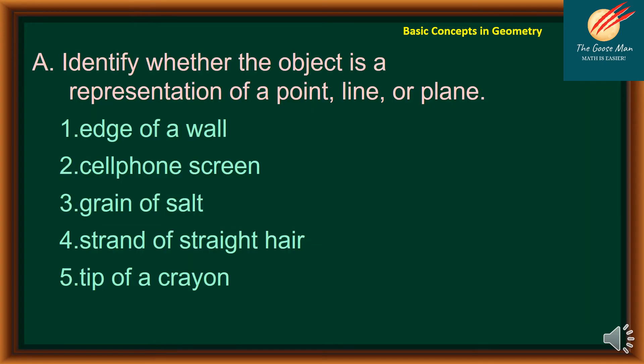Alright, for our exercise, let's identify whether the object is a representation of a point, line, or a plane. So let's consider number one, edge of a wall. This is actually a line. Good. Next, number two, cell phone screen. This is a representation of plane.